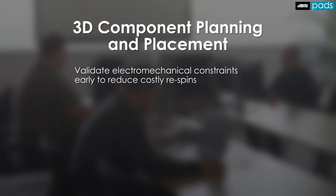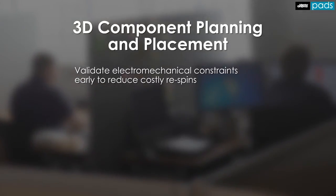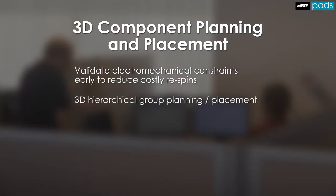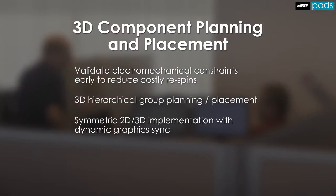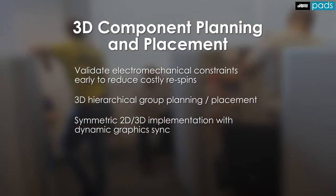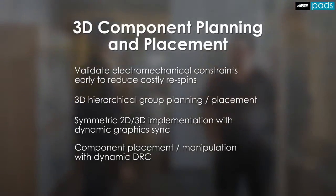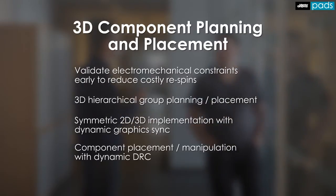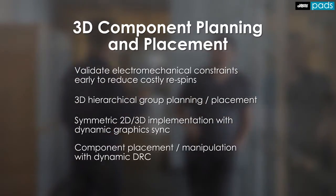Getting the placement correct the first time, or taking into account the mechanical constraints, is an opportunity to eliminate rework during systems integration where the costs are high. 3D placement allows the designer to visualize and validate the mechanical constraints early in the layout process. Symmetric implementation for component planning and placement for both 2D and 3D, including dynamic graphic synchronization, minimizes the impact on your existing PCB design process. Dynamic DRC validation allows for correct-by-construction placement that adheres to your constraints. Let's take a quick look at 3D component planning and placement.